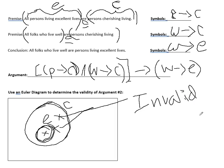We've proved the argument is invalid because the conclusion doesn't follow from the premises being true. This relates to the general conditional: recall that a conditional statement is false when the antecedent is true and the consequent is false. Here, our premises are the antecedent and our conclusion is the consequent. Having a case where both premises are true but the conclusion is false makes this argument invalid.